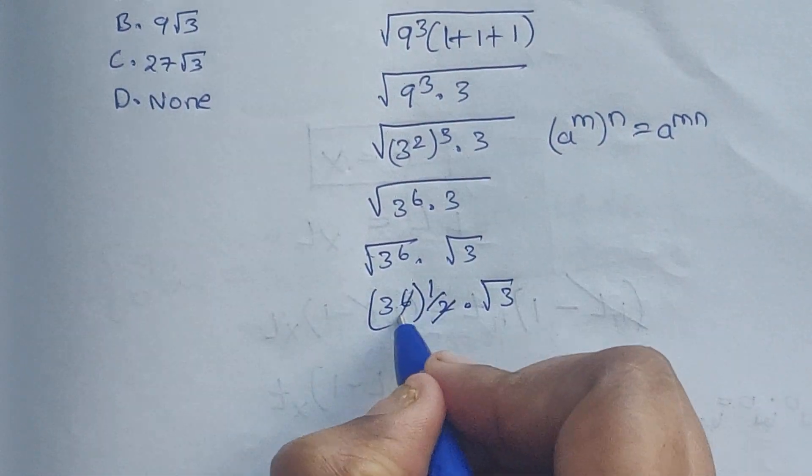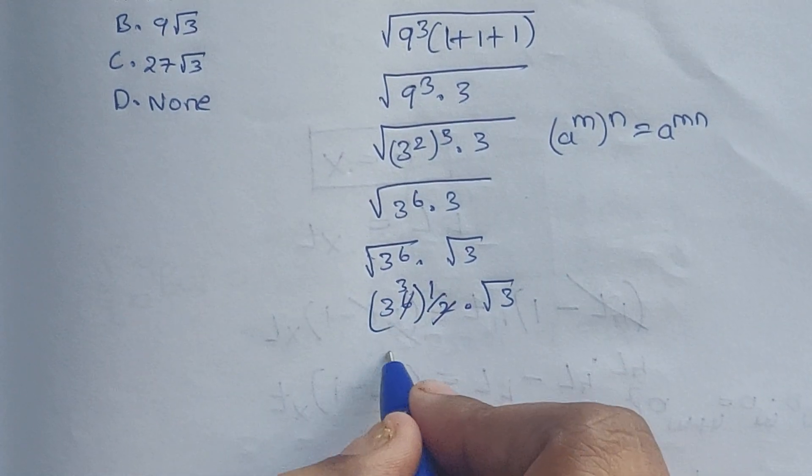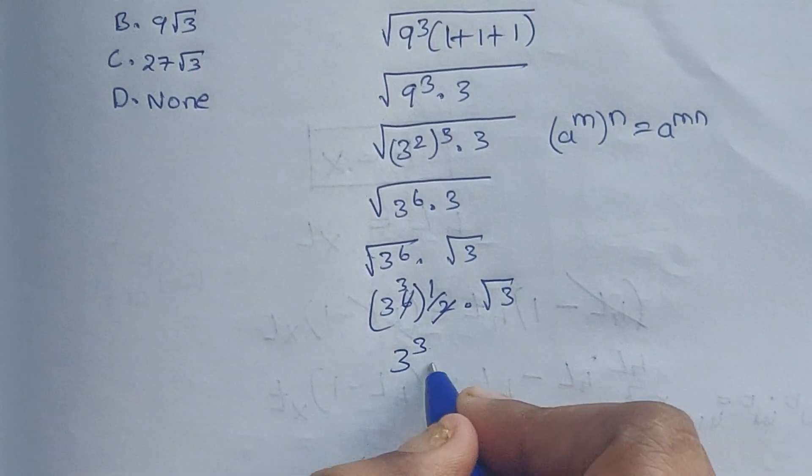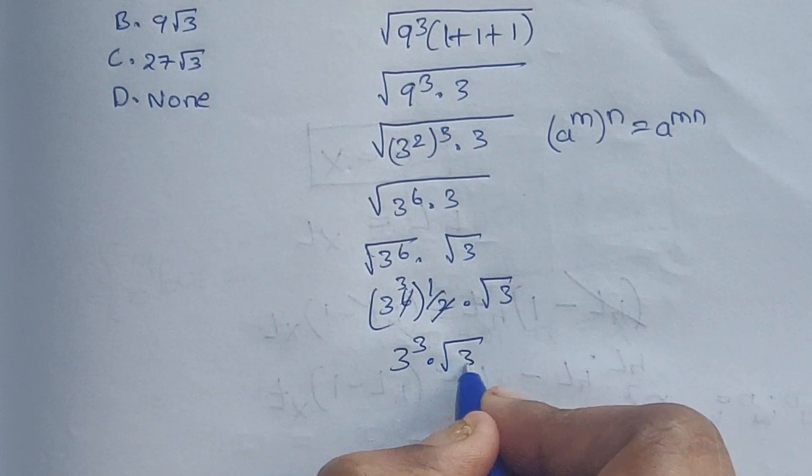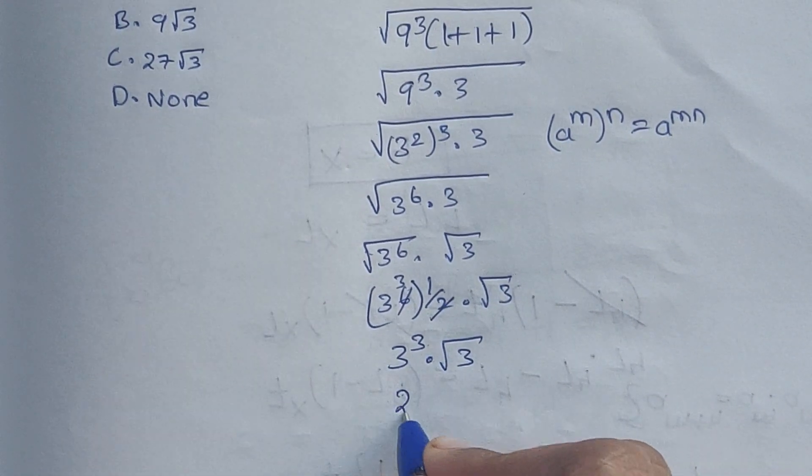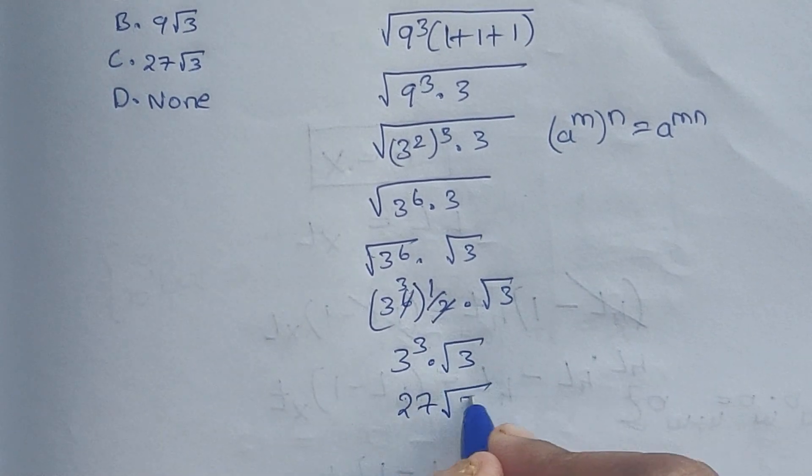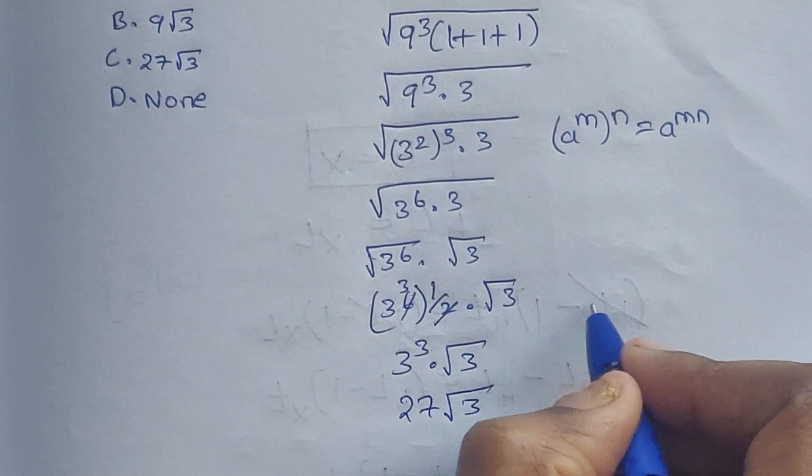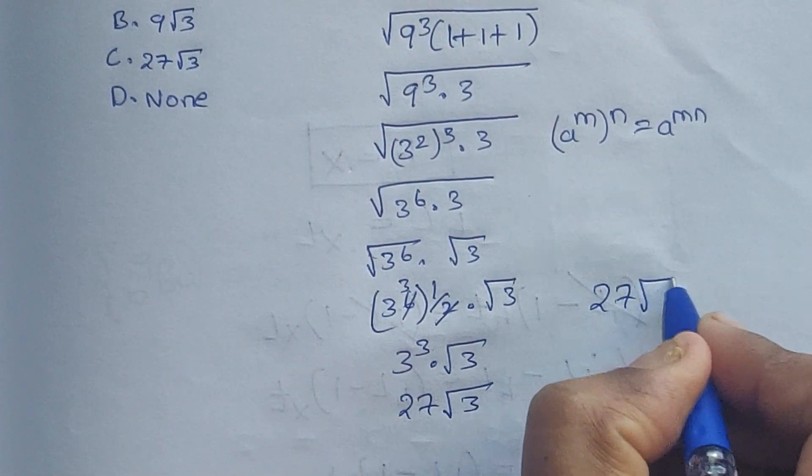So 3 to the power of cube is 27 square root of 3. So 27 square root of 3 is the answer.